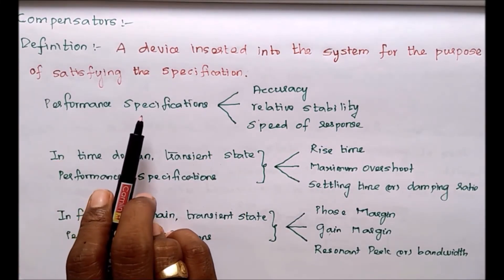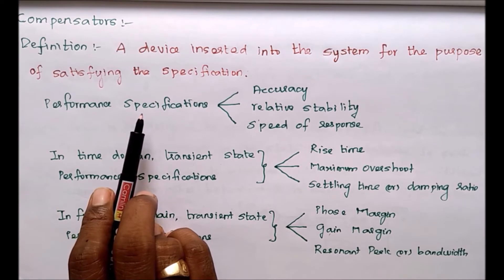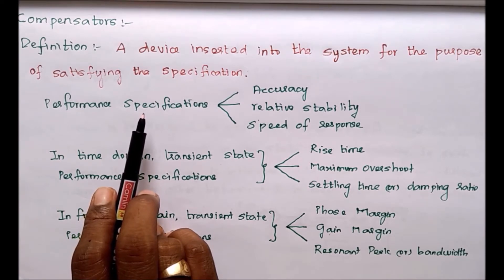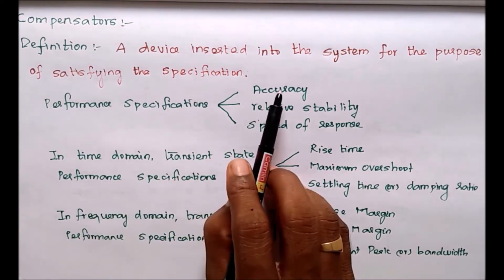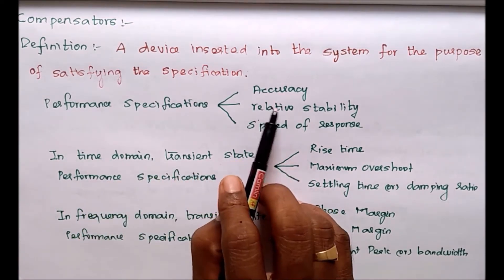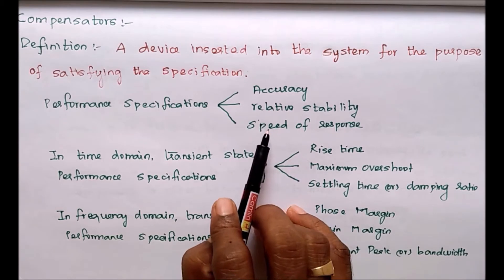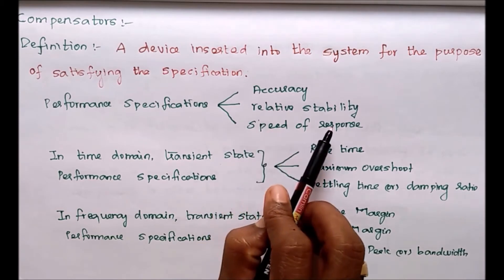We know the performance specifications. The main performance specifications of these systems are accuracy, relative stability, and speed of response.